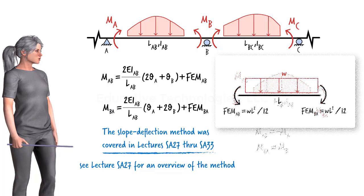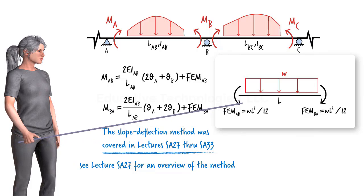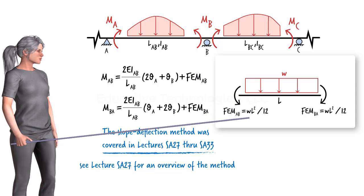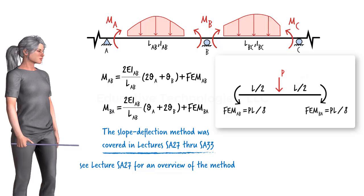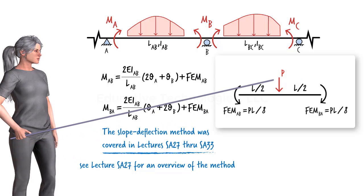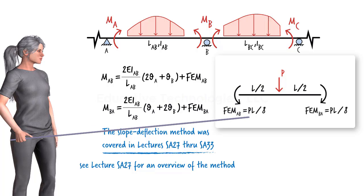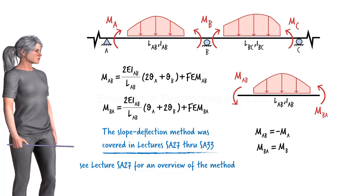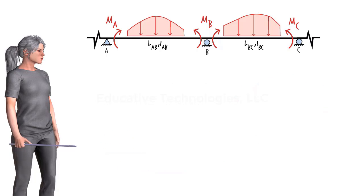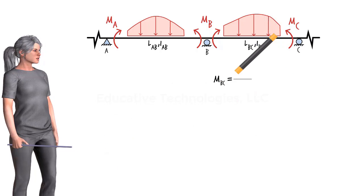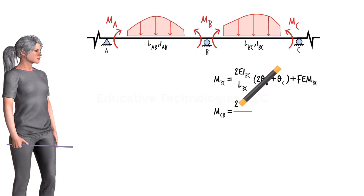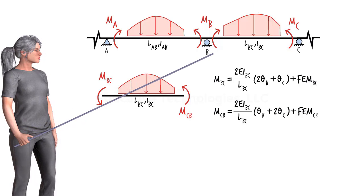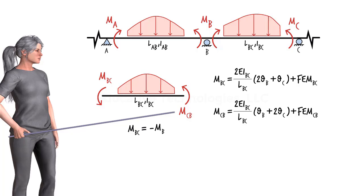For example, if the segment is subjected to a uniformly distributed load W over its entire length L, then the fixed-end moment value is WL squared over 12. If the beam segment is subjected to a concentrated load P at its midpoint, then the fixed-end moment becomes PL over 8. Fixed-end moment values for various loads are tabulated in most structural analysis textbooks. The slope-deflection equations for segment BC can be written in a similar manner, where MBC equals negative MB and MCB equals MC.